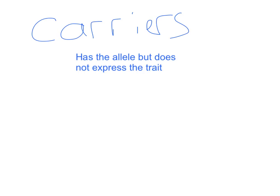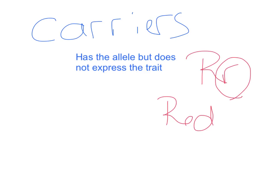Females can be what are called carriers. A carrier is somebody that has the allele but does not express the trait. Carriers are usually heterozygous — something like big R, little r. So if red is dominant to white, those flowers with big R, little r are going to look red, but they carry the allele for white without expressing it. They have the allele but do not express the trait.